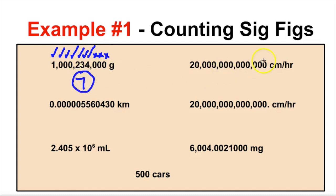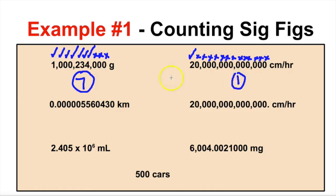Looking at the next number: the two is significant, but none of the trailing zeros are significant because there is no decimal in the number. So there is only one significant figure.